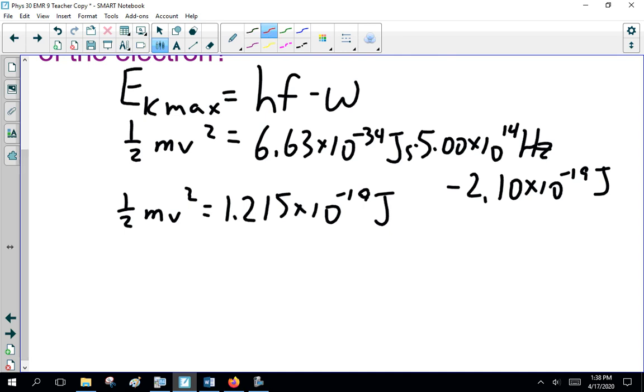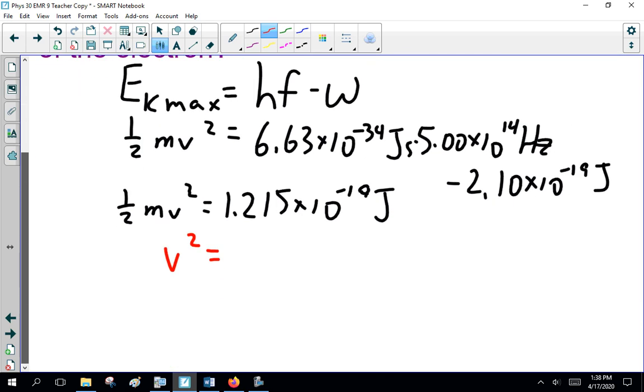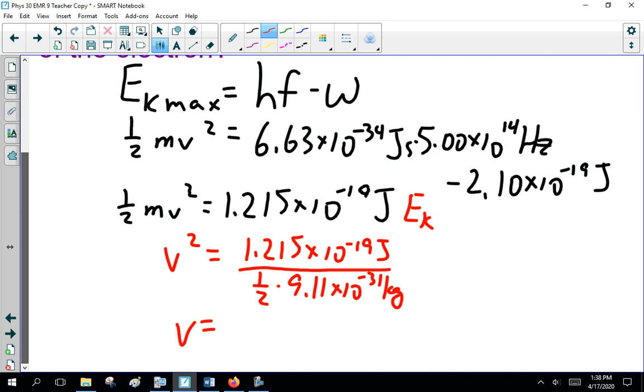What is the velocity of the electron, not the kinetic energy? The velocity, I have to rearrange this, this is 1.215 times 10 to the minus 19 of a joule, 1/2. What's the mass of an electron? If you look at your formula sheet, 9.11 times 10 to the minus 31 of a kilogram, you take the square root of whatever that number is, you get 5.16 times 10 to the 5 m per second. An electron is shot off the metal plate with that velocity.